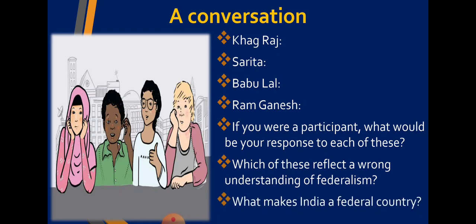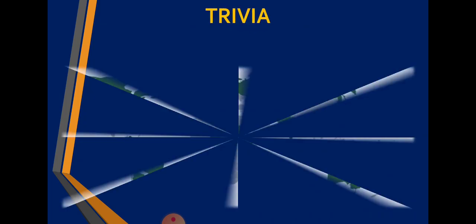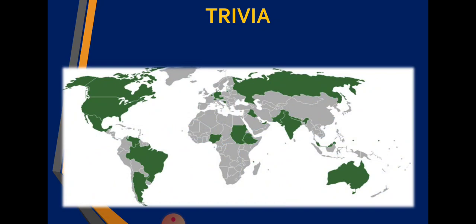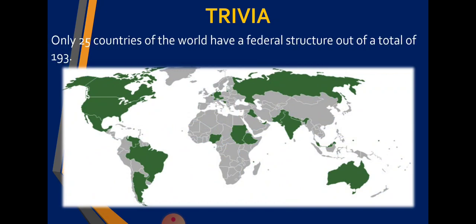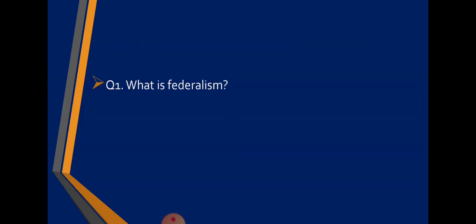What makes India a federal country? We will read this ahead - you can try answering using the features we have discussed that are applicable to India. As a trivia: despite federalism having so many benefits, only 25 countries out of a total of 193 countries in the world have adopted federalism. And in these 25 countries, 40% of the world's population live.